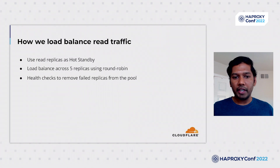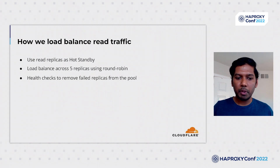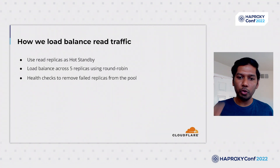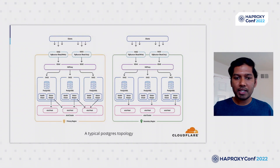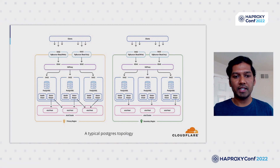First, we will see how HAProxy is helping with the load balancing of read traffic. Then the next half of the presentation is going to be on how HAProxy helps us avoid a multi-master scenario. As you might be aware in any enterprise setup, we have a primary database and then a bunch of replicas. Postgres has a nice feature called hot standby, where we can use the replicas to also serve read-only traffic. In our typical setup, we have five replicas and we use the round-robin method, the default setting from HAProxy, to load balance the traffic.